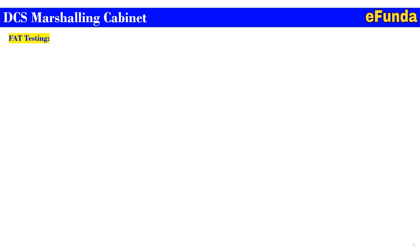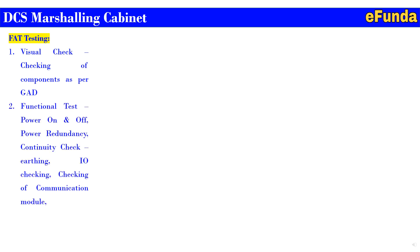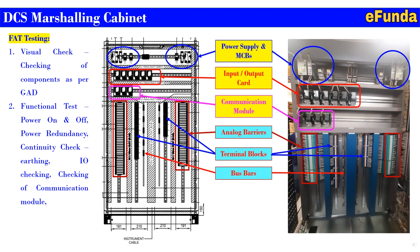Now we will see an example: the DCS marshalling cabinet during FAT. FAT testing involves a visual check — checking of the component as per the GA drawing — and a functional test — power on/off, power redundancy, continuity check for earthing, I/O checking, checking of the communication module, etc. We have used a picture from the internet for the cabinet along with the GA diagram. One can compare the power supply in the GA diagram to the actual cabinet, the input and output cards, the communication module, and the analog barriers shown in the photograph.